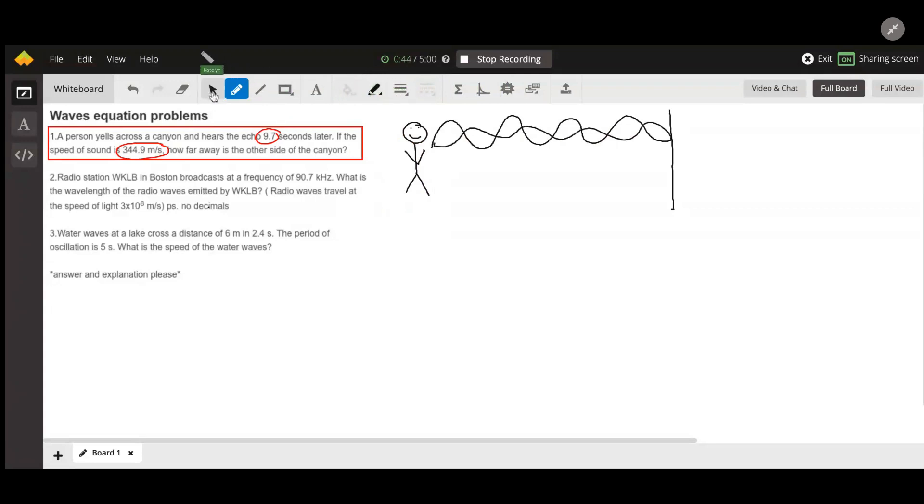So we know that the time it takes for the sound wave to get from the person to the canyon has to be half of this total time it gives us. So we can divide this 9.7 seconds by 2, which gives us 4.85 seconds.